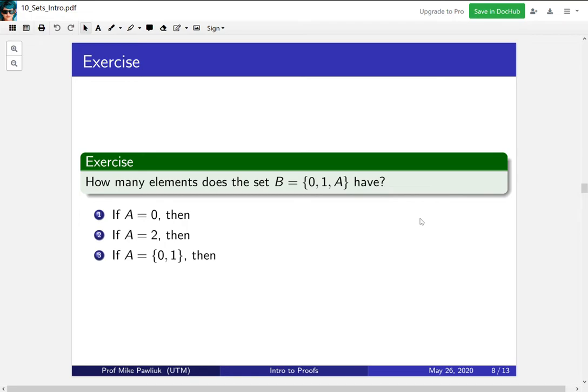We're going to start by looking at something that's kind of strange. So let's start with this question. How many elements does the set B, which is {0, 1, A}, have? Well the first thing you'll realize is that it depends on A. So what would happen if A was 0? Well what would the elements of this be? Just 0 and 1. Remember that sets don't care about repetition.